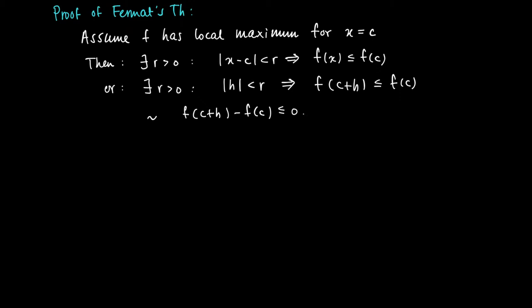So if this holds for any h, h being negative or positive, but at least if h is positive, and chosen such that h is smaller than r, then c plus h has a distance to c smaller than r.